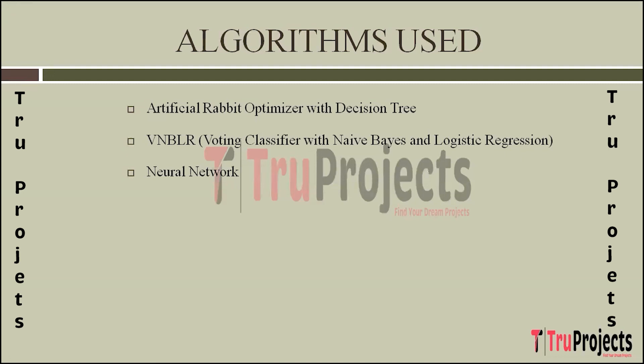The third algorithm is Neural Network (ANN). Neural networks simulate the human brain's neural structure. An Artificial Neural Network (ANN) consists of interconnected nodes (neurons) organized into layers. They learn complex patterns through iterative training on labeled data. For heart disease prediction, the ANN identifies intricate relationships within the dataset, capturing non-linear dependencies for accurate predictions.